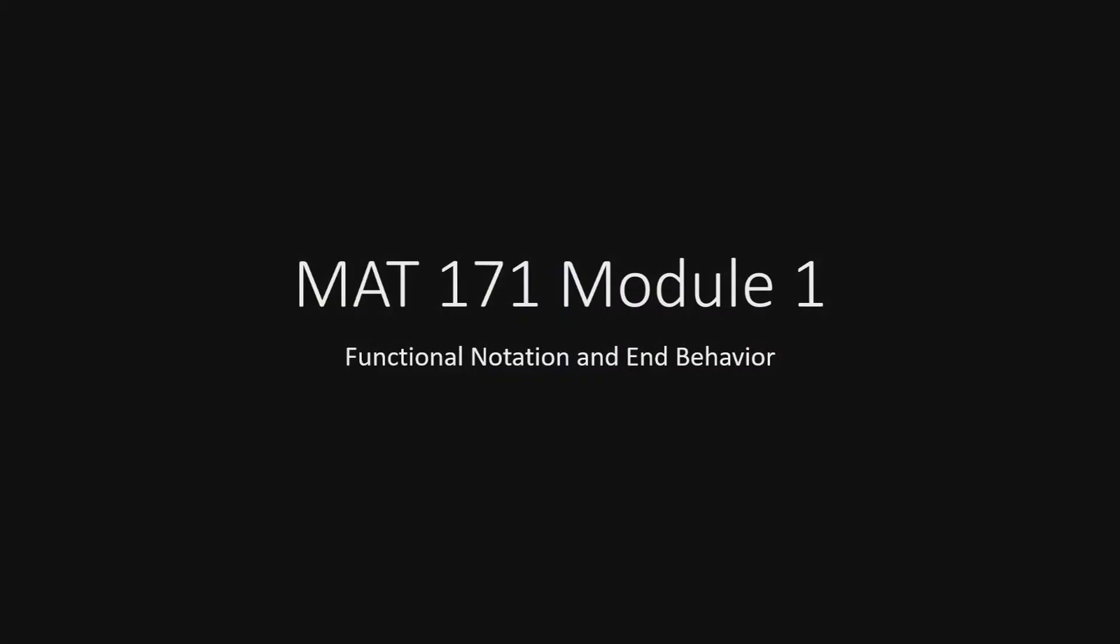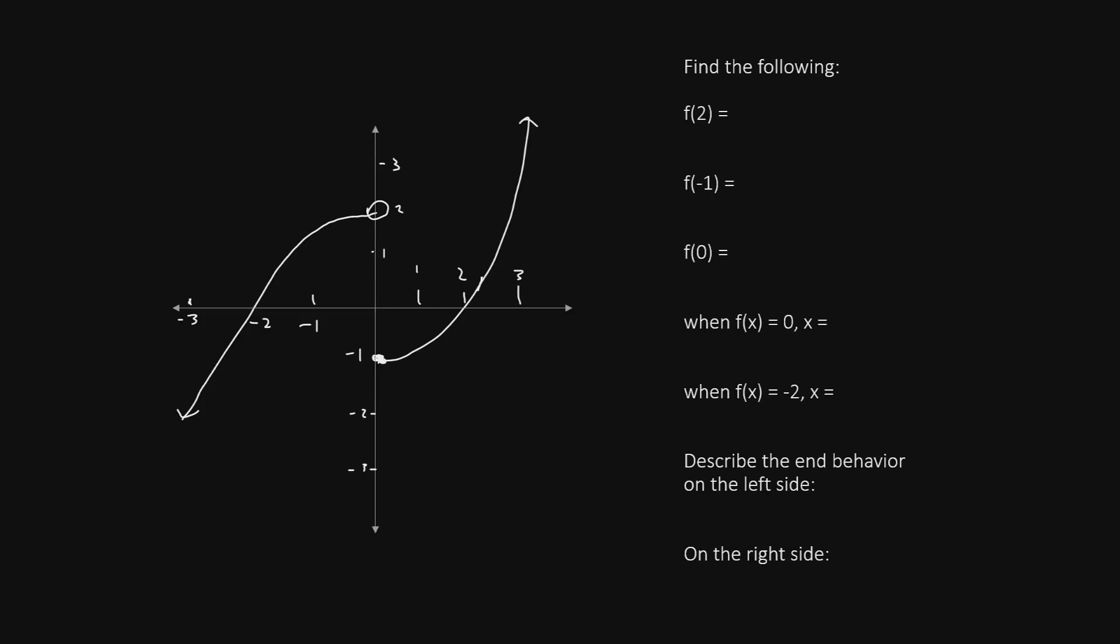Math 171, Module 1: Functional notation and end behavior. For this question, we are given a graph and asked to find a list of the following things. Let's begin with f(2). If you're asked for f(2), what the problem is asking you to do is let x equal 2 and then find y.